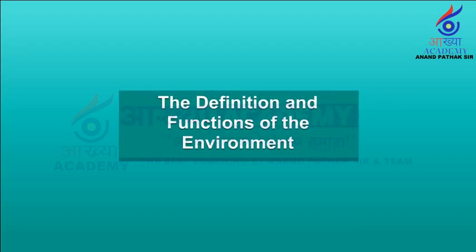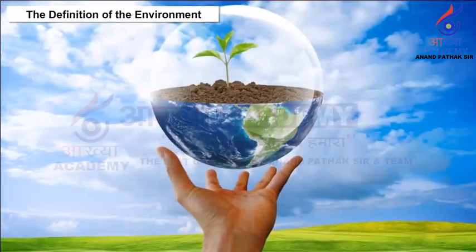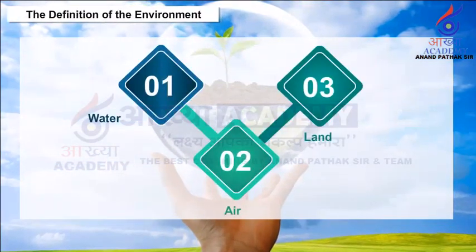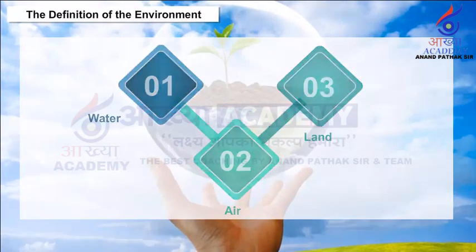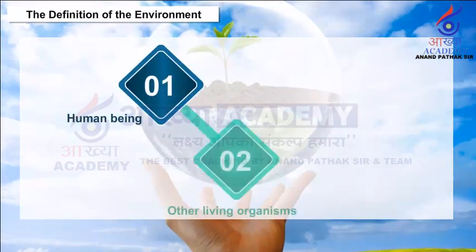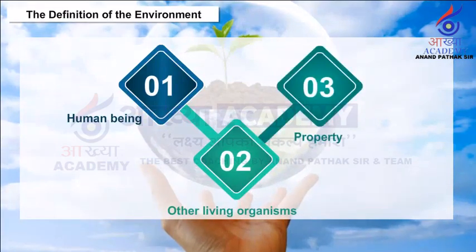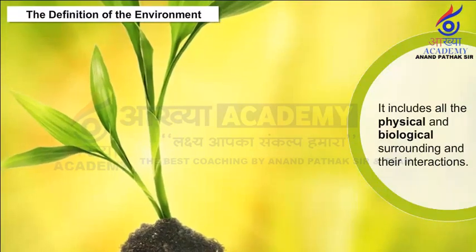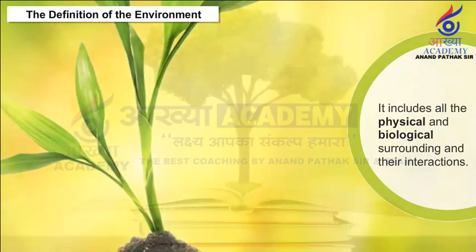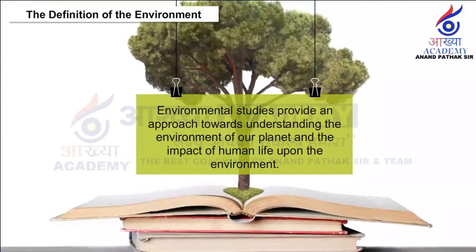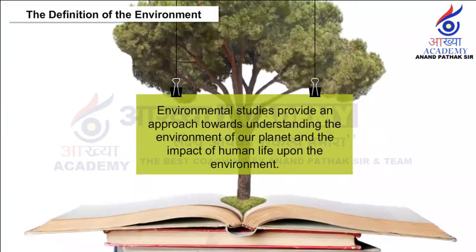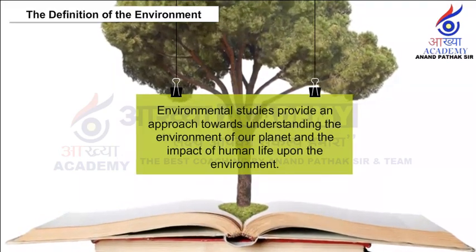The Definition and Functions of the Environment. Environment is a sum total of water, air and land, their interrelationships among themselves and also with human beings, other living organisms and property. It includes all the physical and biological surroundings and their interactions. Environmental studies provide an approach towards understanding the environment of our planet and the impact of human life upon the environment.